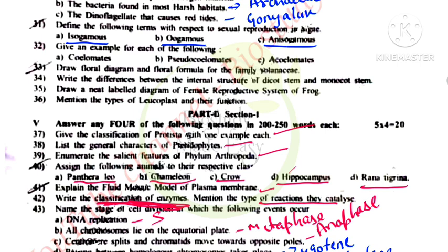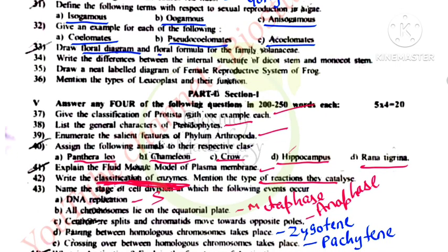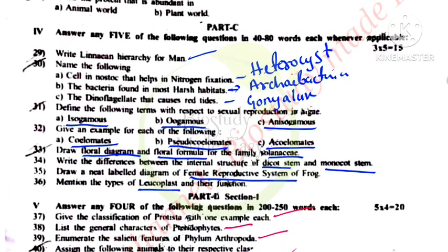Example for coelomates — one example. Pseudocoelomates — one example. Acoelomates include Platyhelminthes. Cnidaria and Porifera are different groups. Floral diagram and floral formula of Solanaceae. Difference between dicot stem and monocot stem. Female reproductive system diagram. Leucoplast types with their functions.